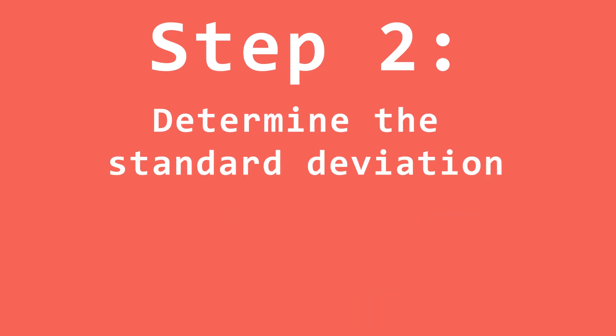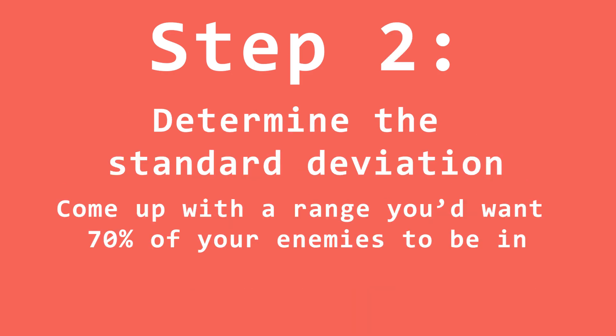Now we need to think about our standard deviation. The best way to do this is to come up with a range you would want 70% of your enemies to be in. I think between 3.25 and 4.75 could work, so our standard deviation will be 0.75. Now that we know how normal distributions work, and that we've picked out our mean and standard deviation, let's move into section 2, where we implement it.